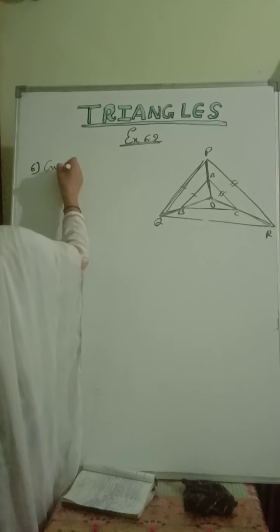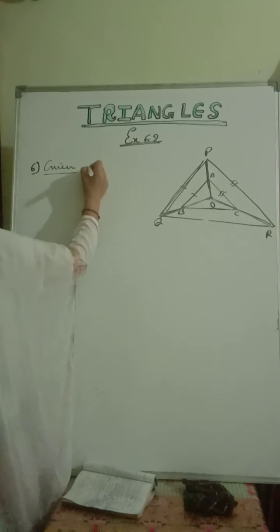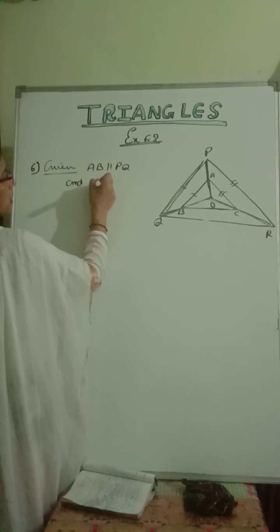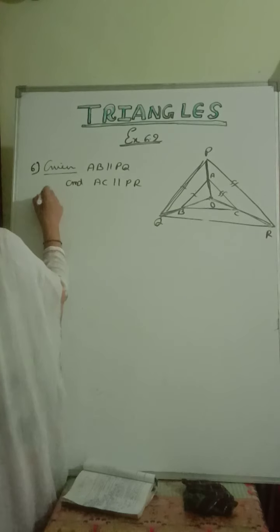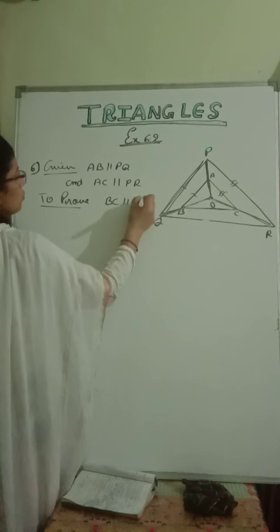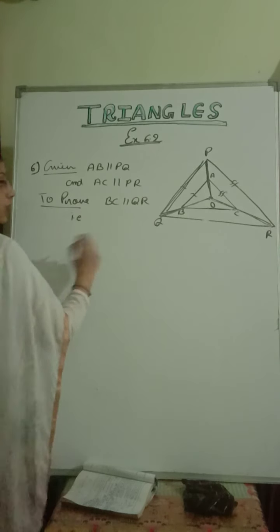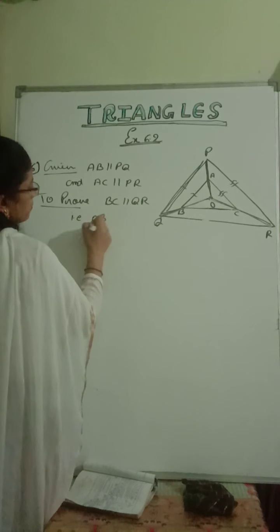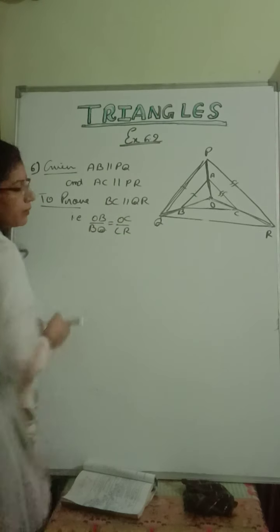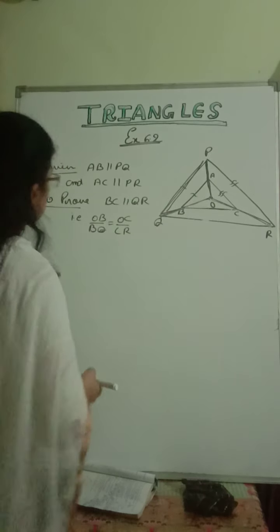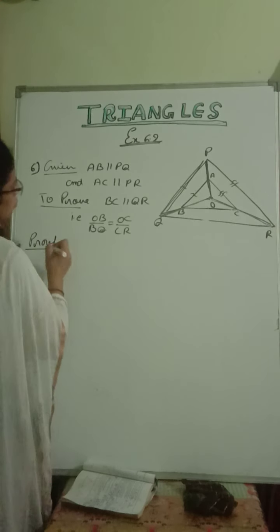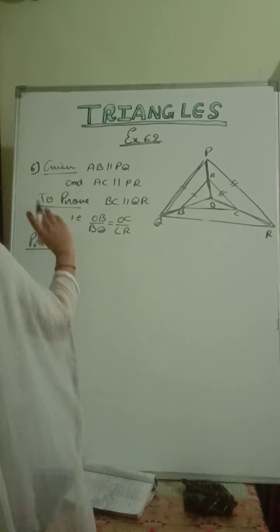So what is given to us? We are given AB is parallel to PQ, and we are given AC is parallel to PR. To prove: we have to prove that BC is parallel to QR. This means we have to prove that OB upon BQ is equal to OC upon CR. If we prove this ratio, then we can conclude BC is parallel to QR.